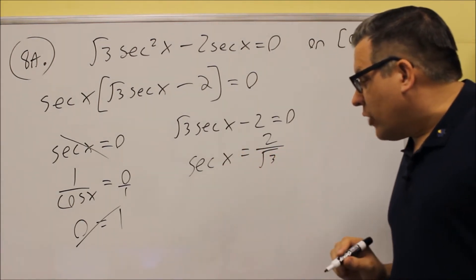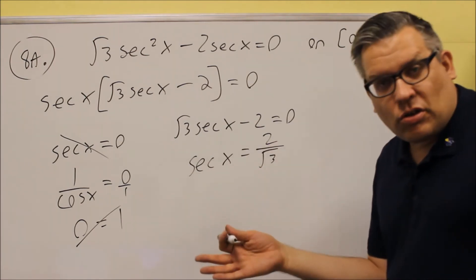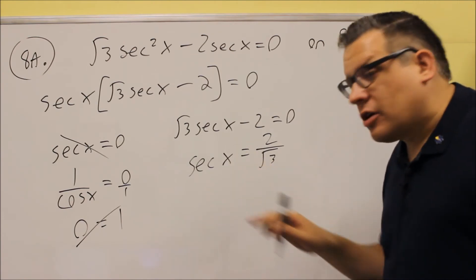Now secant I would rather solve for cosine because I am eventually going to have to use the unit circle to get the answer. And my secant is not on the unit circle, but a cosine is.